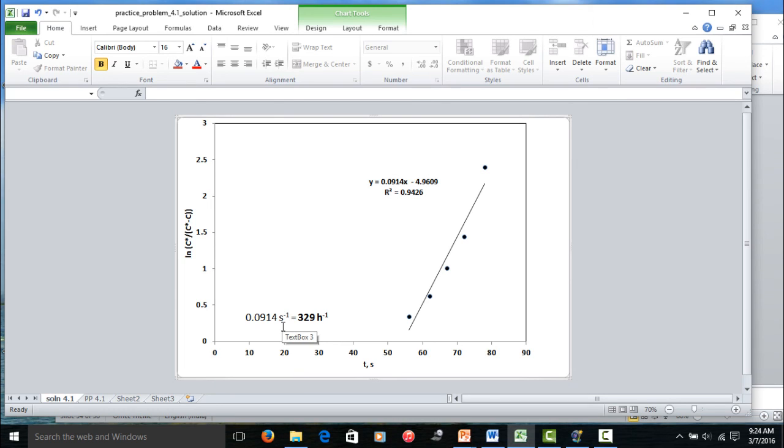We typically provide KLA in per hour. That is easy to make sense because we normally look at KLA values on a per hour basis. On a per hour basis, this turns out to be per second basis times 3600 or 329 hour inverse. That is quite a large KLA for this reactor. But that is what it is. So, that is the solution to the problem.